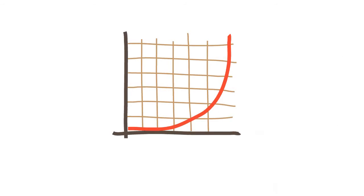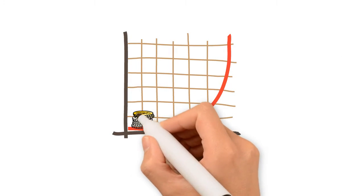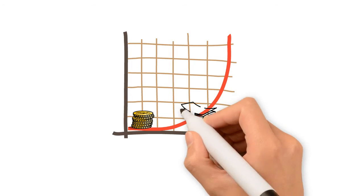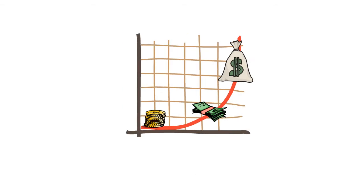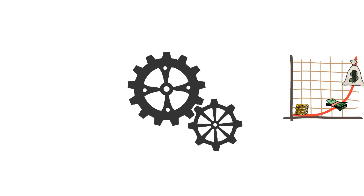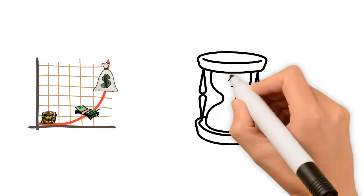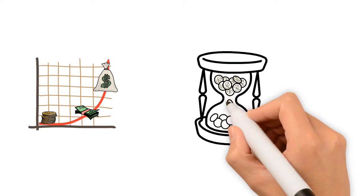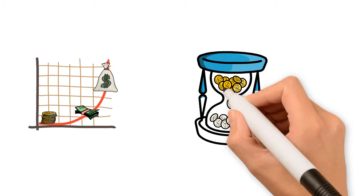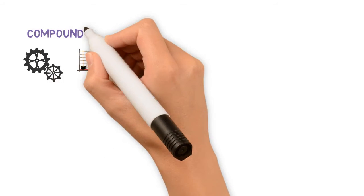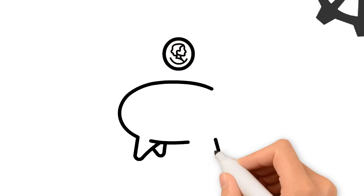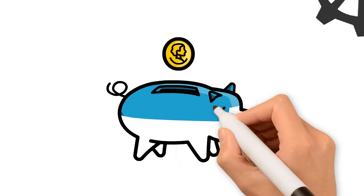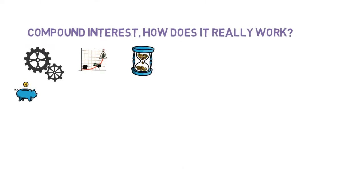Today we're going to talk about compound interest, and I'm going to explain compound interest in an easy and visual way for beginners. By the end of this video, you should have an idea about how compound interest works and applies to your investment, as well as how it indirectly affects your wealth through fund management fees. I will also share an easy rule of thumb on how to calculate the doubling time of an investment at a specific interest rate, and how many days it takes to reach $1 million if you start with one dollar and double your money each day.